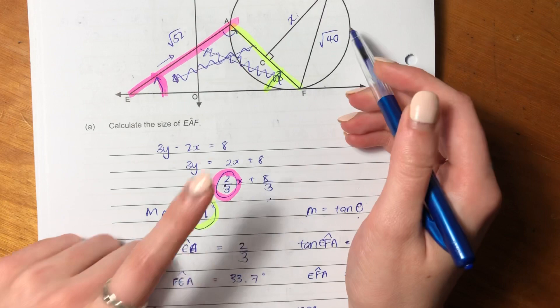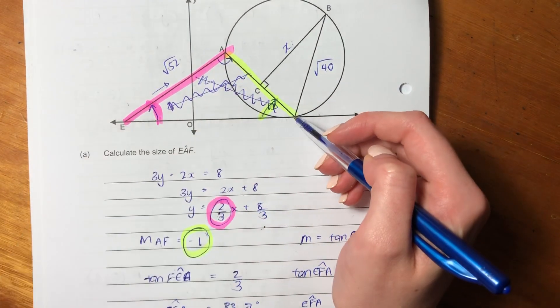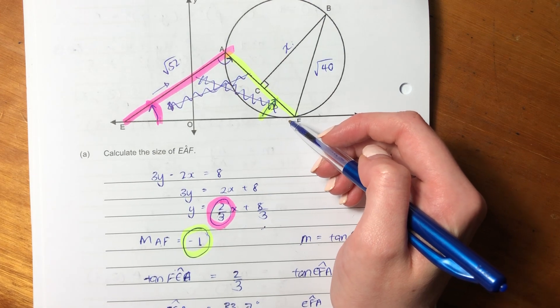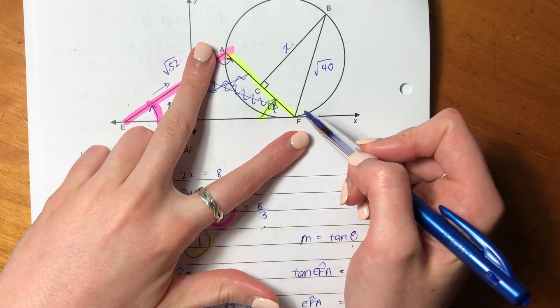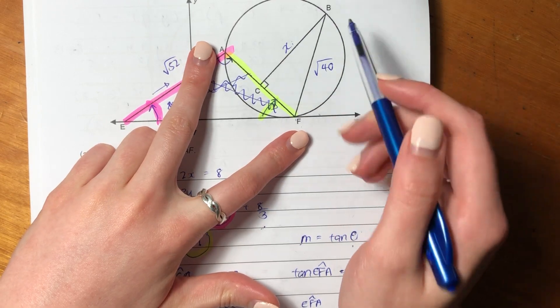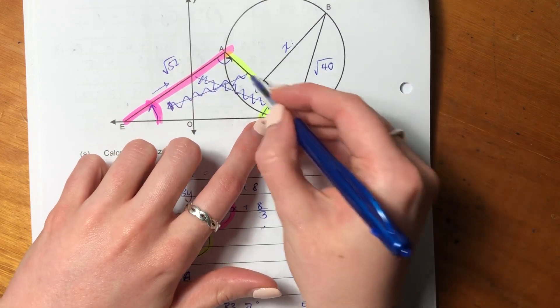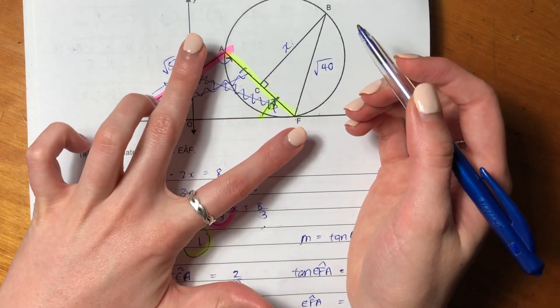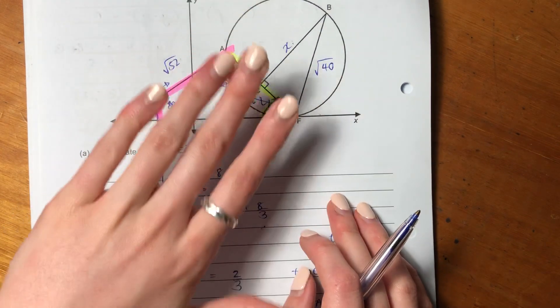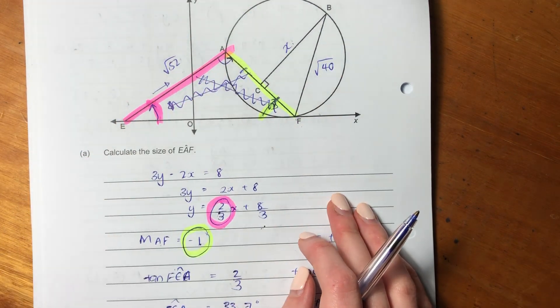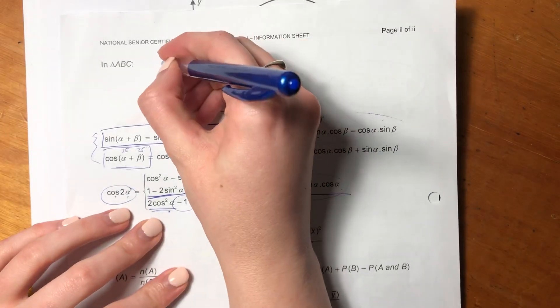So what we want to do is effectively, we want to get this length here. We want to get x. So we could do Pythag if we could find out what the base CF is. So let's think about how we can go about getting CF. If we could get CF, because remember CF is half of AF, because we have a line from the center perpendicular to the chord. So we know that these two sides are equal to each other.